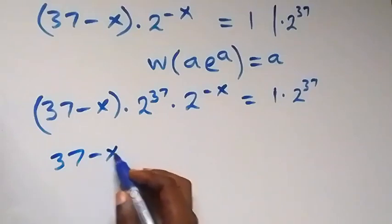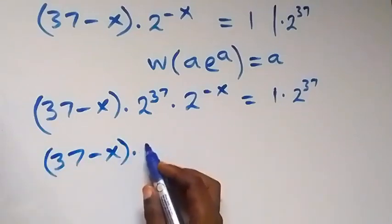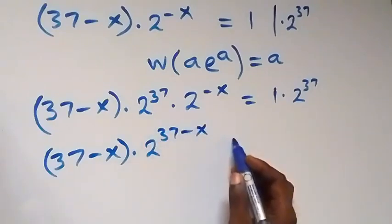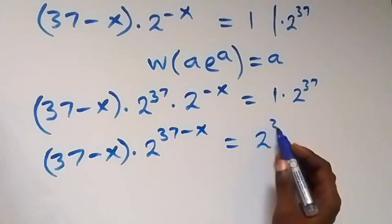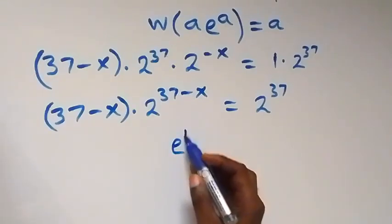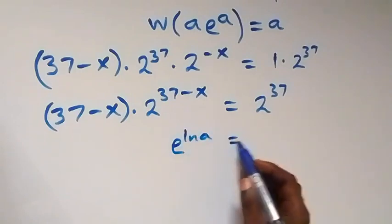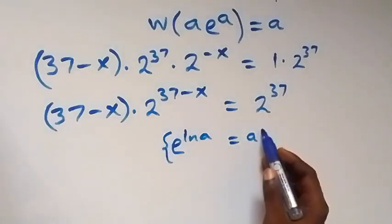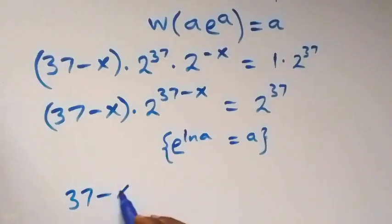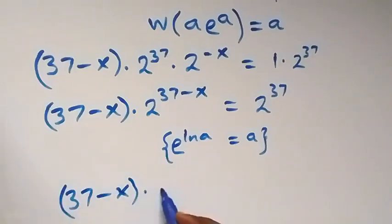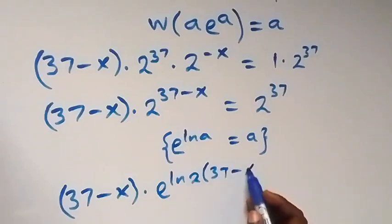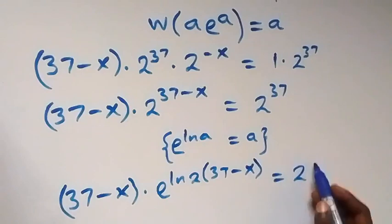We can write this again as 37 multiplied by 2 raised to power 37 minus x, now equals 2 raised to power 37. Recalling that e raised to power ln a equals a, we can write 2 as e raised to power ln 2. This becomes 37 minus x, multiplied by e raised to power ln 2, times 37 minus x, equals 2 raised to power 37.